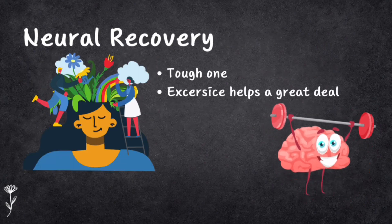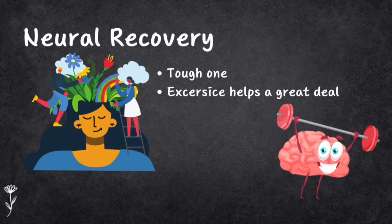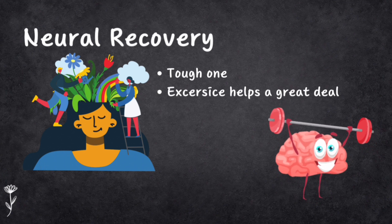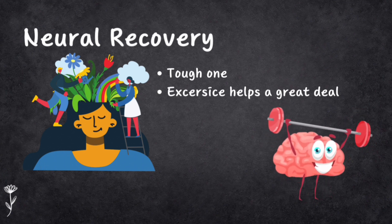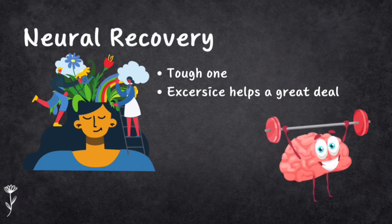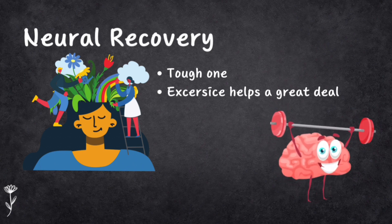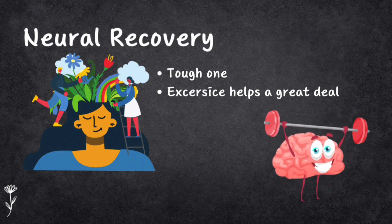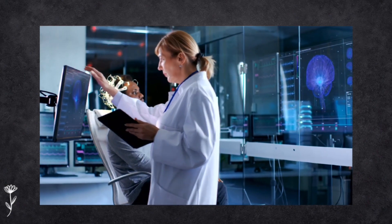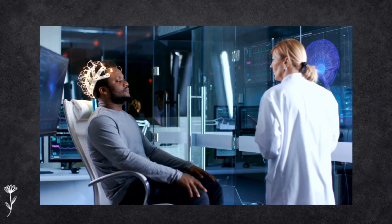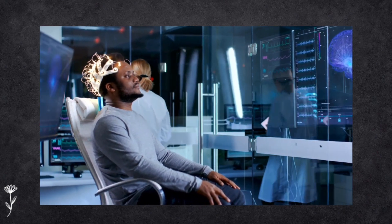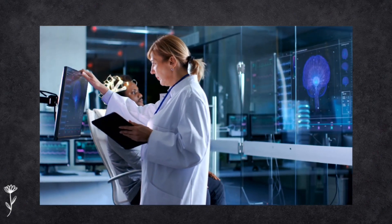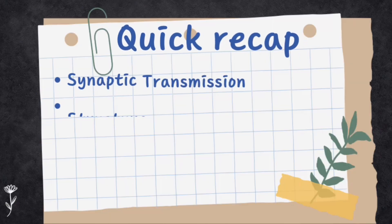Recovering brain function after damage is tough, and scientists are still figuring it out. Education and intelligence seem to give our brain a head start, and doing exercises for the brain and body can help too. Scientists are exploring experiments like transplanting neurons to help with CNS damage such as Parkinson's disease. Recent advances in neuroscience post-1980s have concluded that the brain has the ability to constantly change the structure and functions of cells in response to any experience, injury, or trauma — and this is known as neuroplasticity.